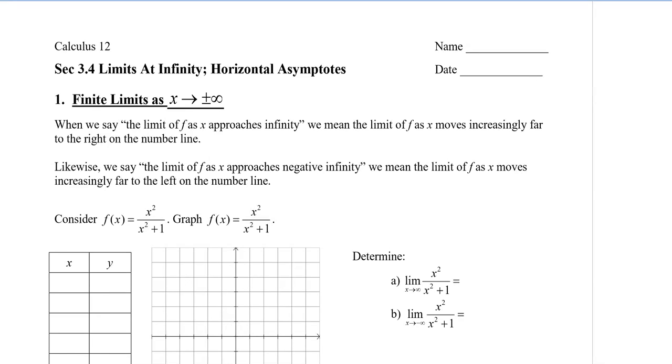In this video, we're going to take a look at limits at infinity, which will lead into horizontal asymptotes. When we say the limit of f as x approaches infinity, we mean the limit of f as x moves increasingly far to the right on the number line. This means, what is the y value as x gets bigger and bigger?